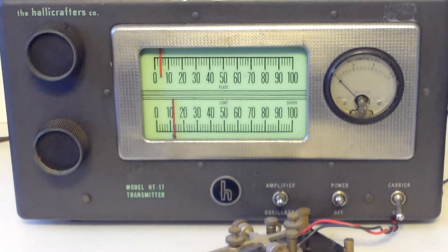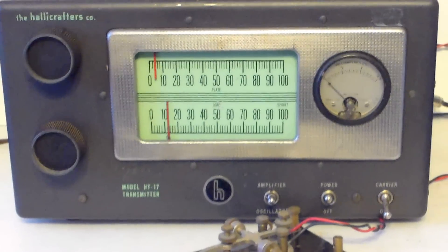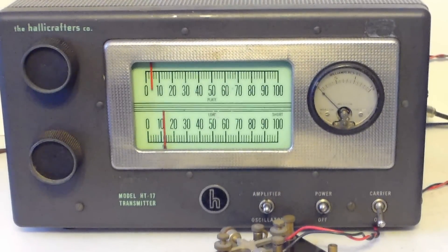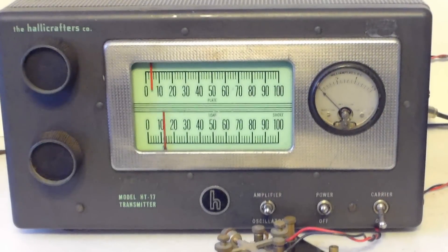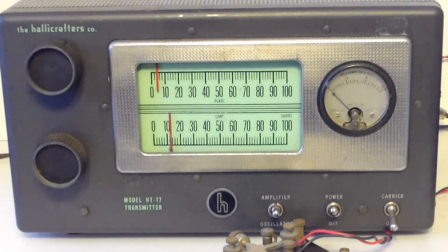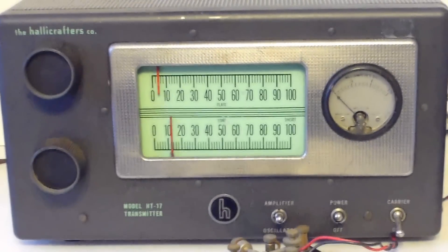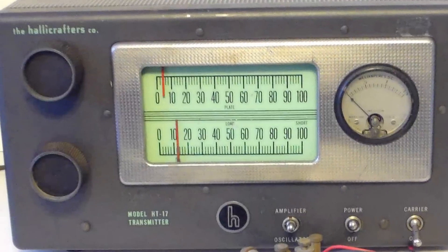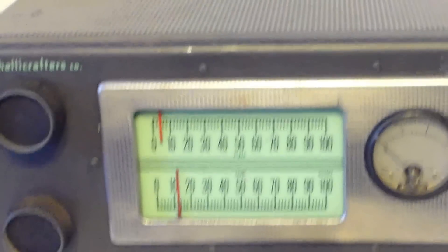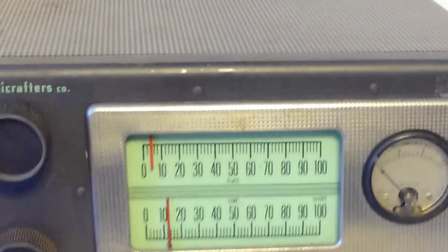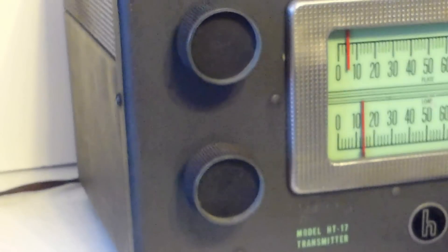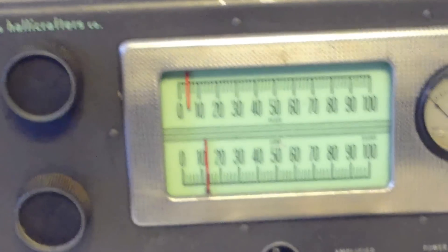This is a Hallicrafters HT-17 and it is a little beauty. It is putting out not quite 17 watts, something like that. It has an input of about 25 watts, it's running an 807, and it is pretty good-looking. As you can see here, it's very good-looking, it's a real little honey.